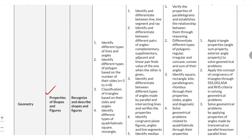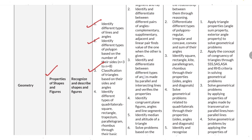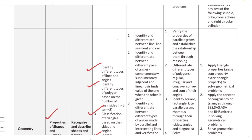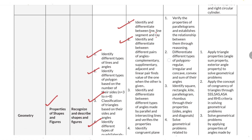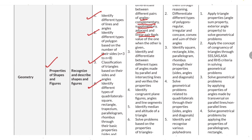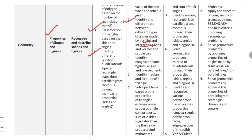The next topic is properties of shapes and figures under geometry. Questions can involve: identifying different types of lines and angles; identifying different types of polygons based on number of sides; classifying triangles based on sides and angles; identifying types of quadrilaterals like square, rectangle, and trapezium; differentiating between line, line segment, and ray; and identifying different pairs of angles like complementary, supplementary, adjacent, linear pair, and angles formed by intersecting lines.